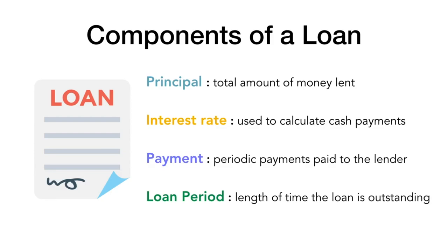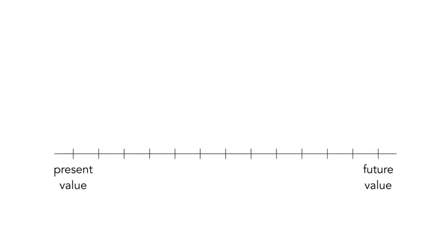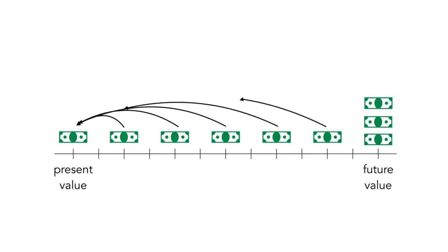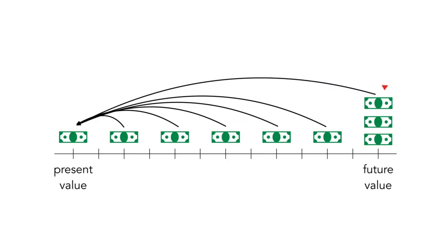In the same way that we need to calculate the present value of investments, we also need to calculate the present value of a loan in order to figure out what the value of our loan obligation is today. We do this by discounting the future cash flows to today's dollars. These outflows include both the cash payments we make during the loan and the large cash outflow we make to repay the loan at the end.